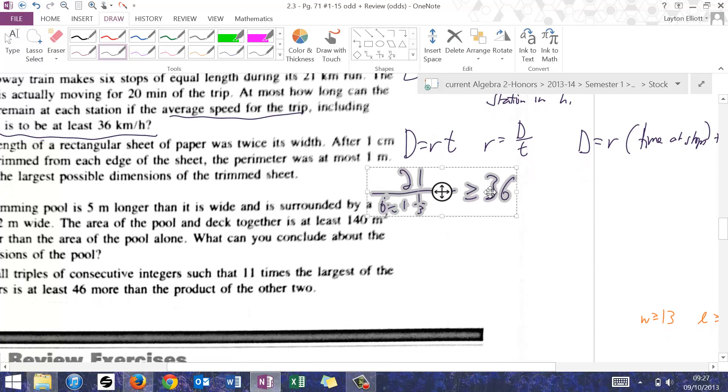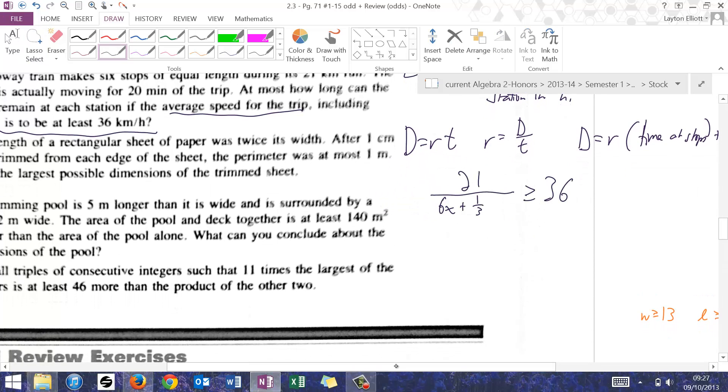So let's take a look at this. What I'm going to do as a quick step is multiply the numerator and denominator by 3. That way I can clear the 1/3. So I have 63 over 18x plus 1 is greater than or equal to 36.